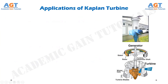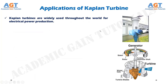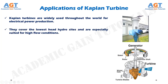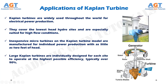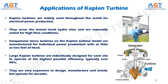Kaplan turbines are widely used throughout the world for electrical power production. They cover the lowest head hydro sites and are especially suited for high flow conditions. Inexpensive micro-turbines on the Kaplan turbine model are manufactured for individual power production with as little as 2 feet of head. Large Kaplan turbines are individually designed for each site to operate at the highest possible efficiency, typically over 90%. They are very expensive to design, manufacture, and install, but operate for decades.